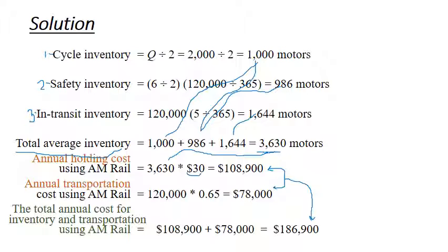Step 1: Cycle inventory = lot size / 2 = 2,000 / 2 = 1,000 units. Step 2: Safety inventory = (lead time / 2) × (annual demand / working days) = (6/2) × (120,000/365) = 3 × 328.77 = 986 units.